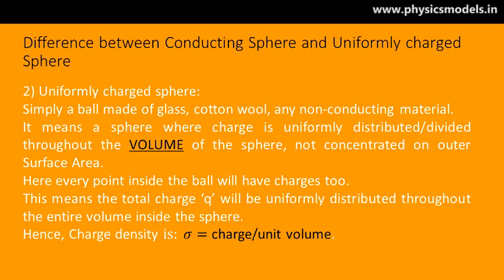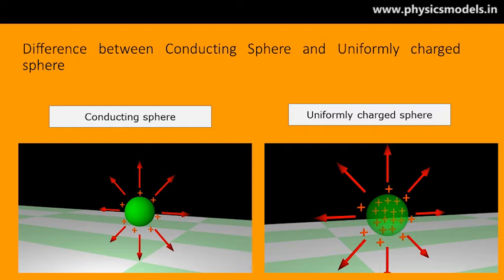This picture makes it very clear. On the left is a conducting sphere, and on the right is a uniformly charged sphere, where you can see all the positive marks inside that ball itself. Therefore, we must be careful to note what we are dealing with in a particular case.